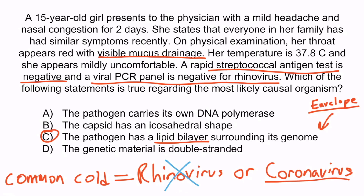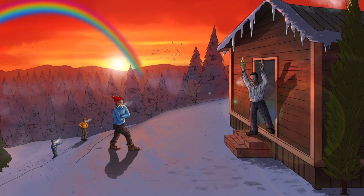And thank goodness — look how cold it is out there. Answer A is wrong because it describes a negative sense virus; negative sense viruses carry their own RNA polymerase, and coronavirus is a positive sense virus — remember that positive-looking rainbow. Answer B is wrong because coronavirus has a helical capsid shape, not icosahedral. And D is wrong because coronavirus is single-stranded. Almost all RNA viruses are single-stranded, so assume the virus is single-stranded unless something in the image obviously indicates double-stranded. Now you've learned all you need to know for coronavirus, and that concludes this section.